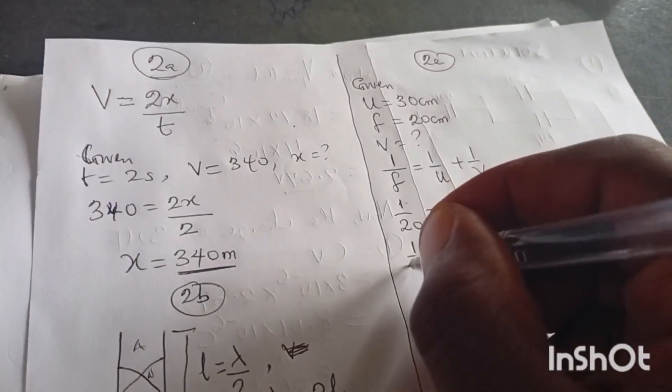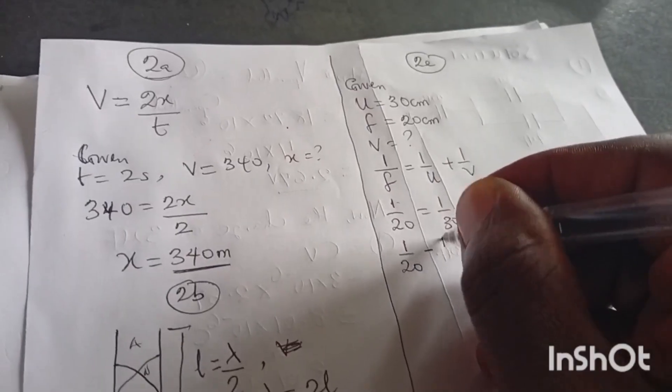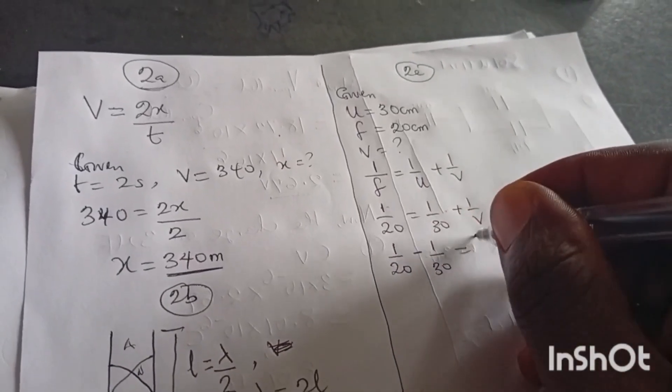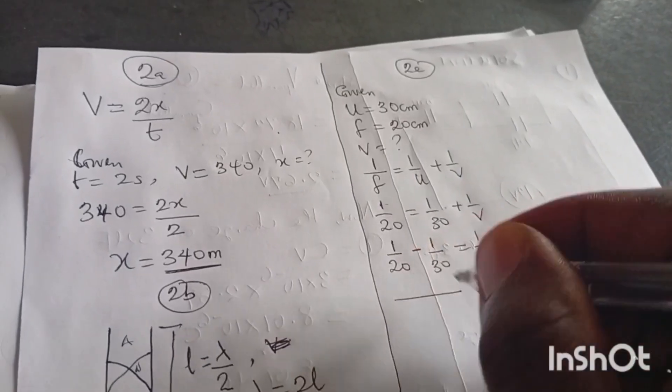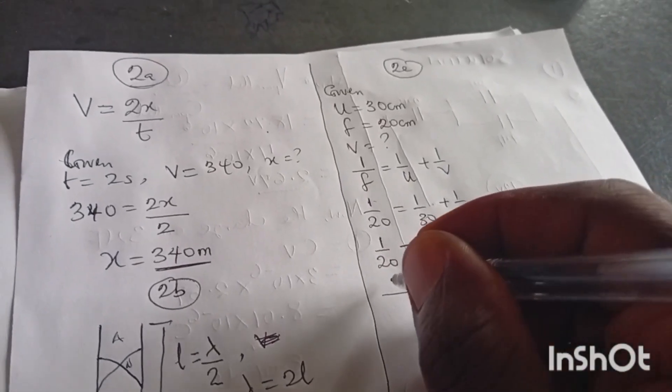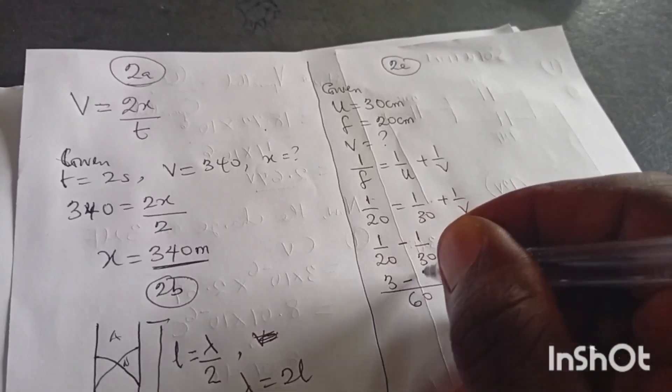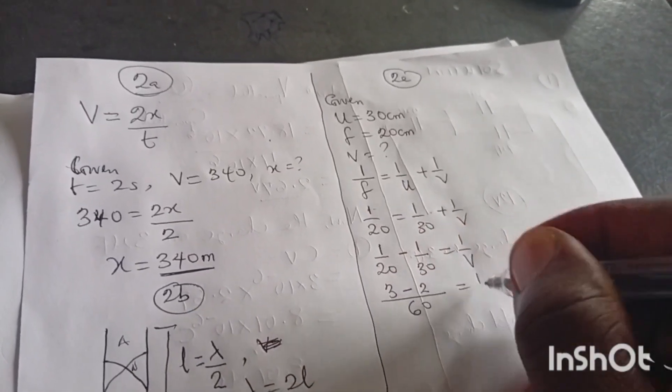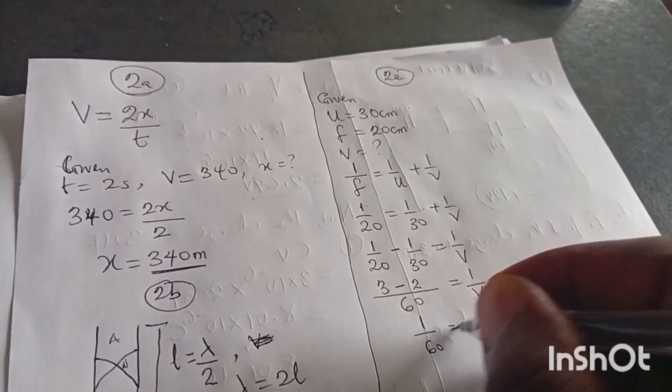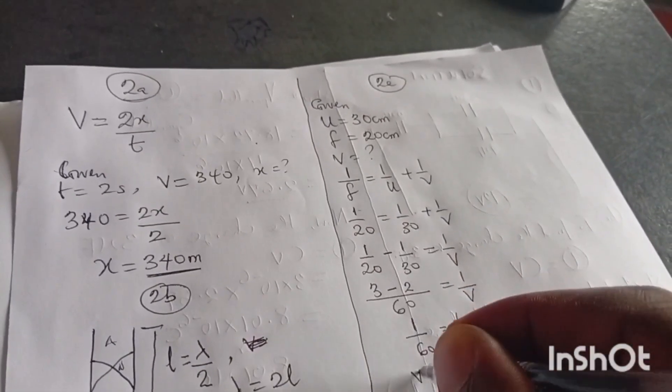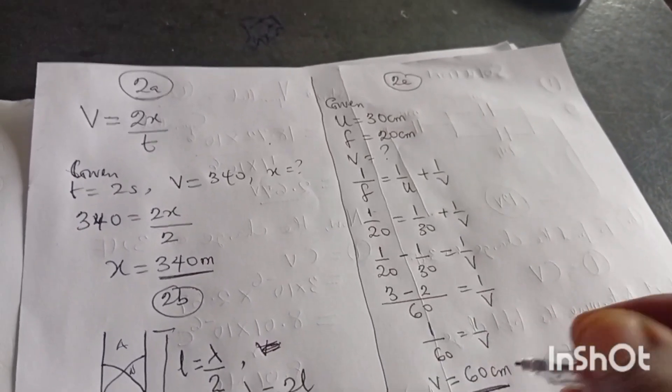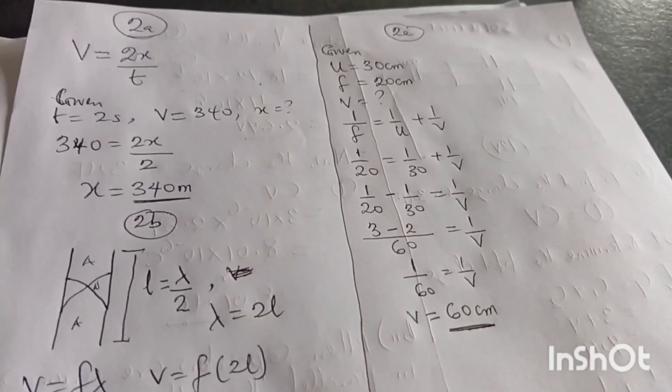Your primary school techniques, please apply. Collect like terms. Make 1 over V the subject. Everything equals to 1 over V. LCM 60. 20 is 60, that's 3 minus 2 equals to 1 over V. 1 over 60 equals to 1 over V.